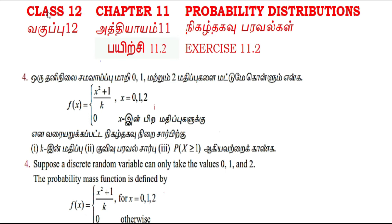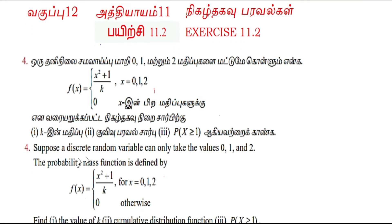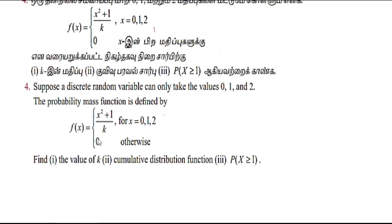Assalamualaikum students. Class 12, Chapter 11, Exercise 11.2, Question number 4. Suppose a discrete random variable can only take the values 0, 1, and 2. The probability mass function is given as f(x) = (x² + 1) / k for x = 0, 1, 2 and 0 otherwise.